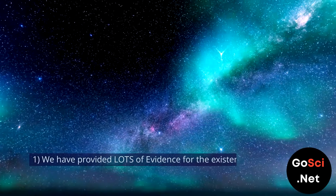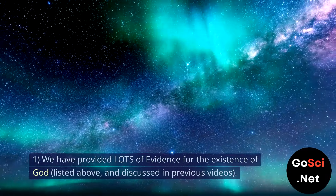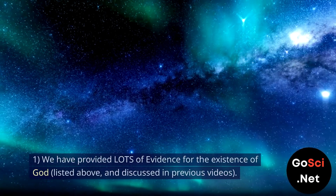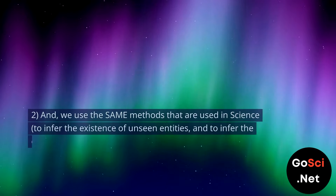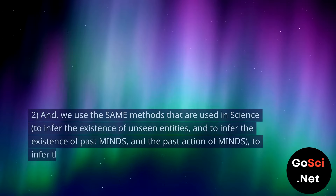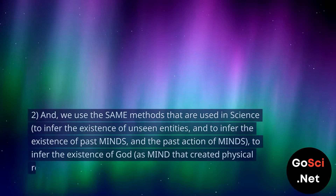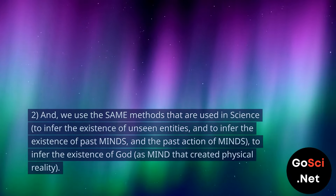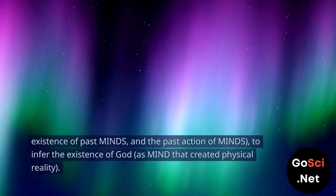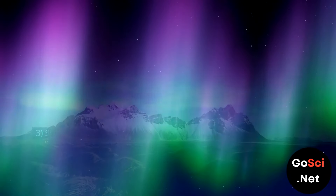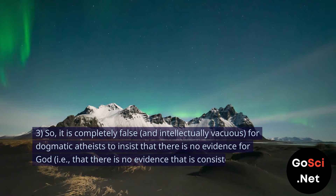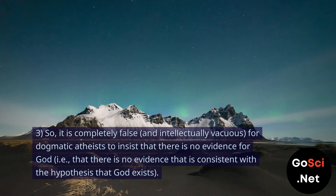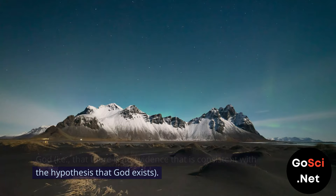Conclusion. We have provided lots of evidence for the existence of God, listed above, and discussed in previous videos. And we use the same methods that are used in science to infer the existence of unseen entities, and to infer the existence of past minds and the past action of minds, to infer the existence of God as mind that created physical reality. So, it is completely false and intellectually vacuous for dogmatic atheists to insist that there is no evidence for God — i.e., that there is no evidence that is consistent with the hypothesis that God exists.